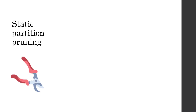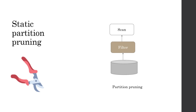Now that we understand filter push down, let's look at static partition pruning before we go to dynamic partition pruning. Partition pruning means we are pruning the data or reading only what is required. The additional thing when we talk about partition pruning is that the data set is actually partitioned. So if I partition by city name, it is all the more efficient — I can look at a specific partition, apply the filter using that partition, and then do the scan.